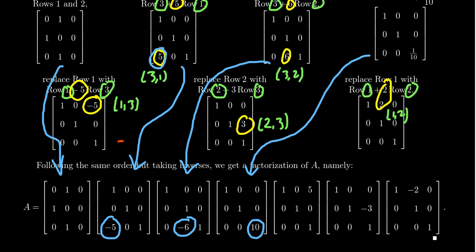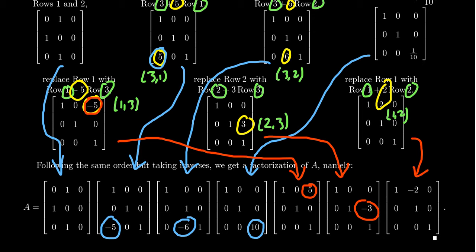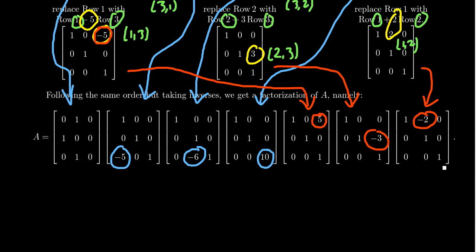The fifth operation — subtracting 5 times row 3 from row 1 — becomes a positive 5 in that position. The sixth, row 2 plus 3 times row 3, becomes negative 3. And the last, row 1 plus 2 times row 2, becomes negative 2. For inverse elementary matrices: interchange matrices are their own inverses, scaling matrices take the reciprocal, and replacement matrices switch the sign. This shows A written as a product of 7 elementary matrices — its elementary factorization.